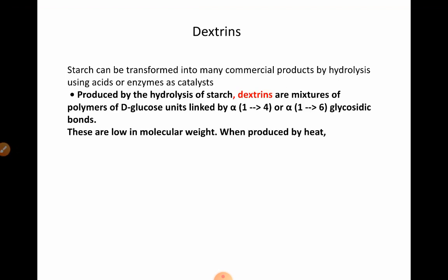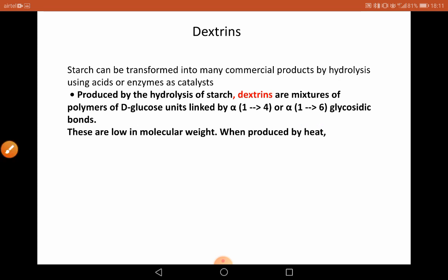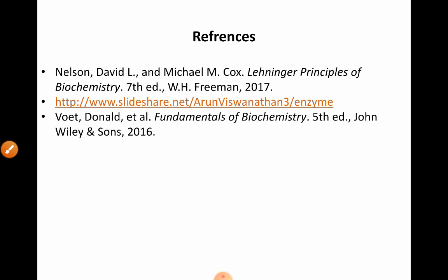The third polymer is dextrin, and it is produced by the hydrolysis of starch. Hydrolysis of starch generates dextrins, which are mixtures of polymers of D-glucose units linked by alpha-1,4 or alpha-1,6 glycosidic linkages. These are low in molecular weight when produced by heat. With this we will stop our discussion on homopolysaccharides, and in the next lecture we will discuss about heteropolysaccharides.